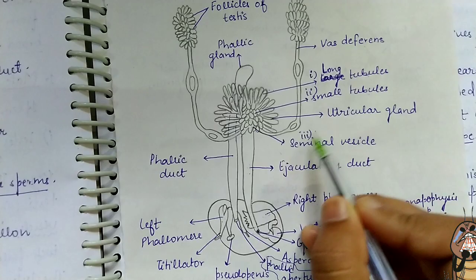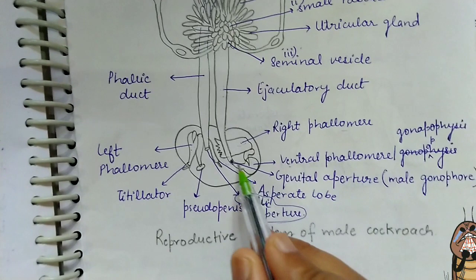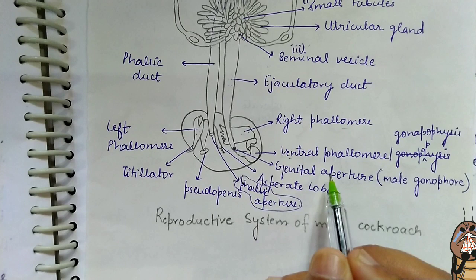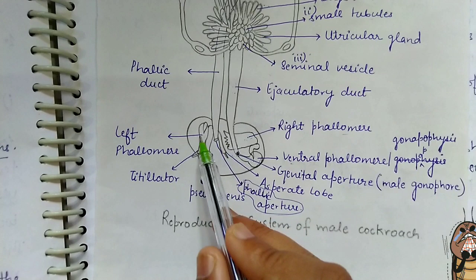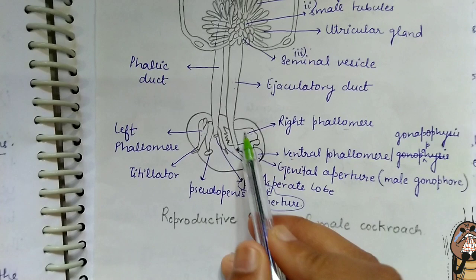The male genital aperture is a small aperture below the anus. It lies on the ventral phallomere. The three phallomeres are the left phallomere, right phallomere, and ventral phallomere.